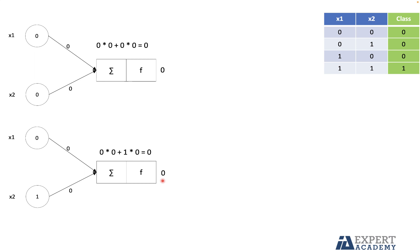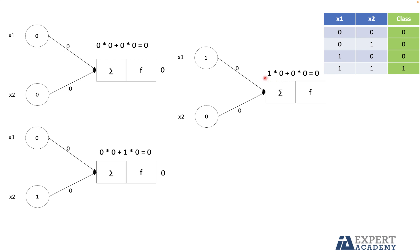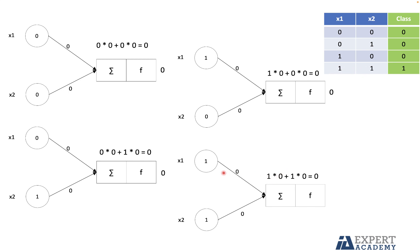Moving on to the next row, X1=1 and X2=0: 1 times 0 plus 0 times 0 equals 0. Applying the step function, the result is 0. Finally, for the last row, X1=1 and X2=1: 1 times 0 plus 1 times 0 equals 0. Applying the step function, the result is also 0. These outputs are the predictions of the neural network.